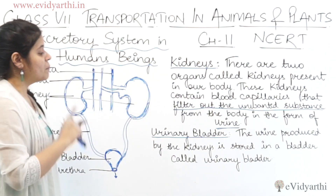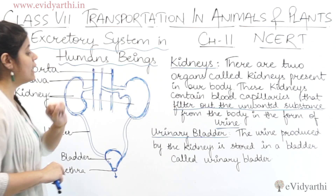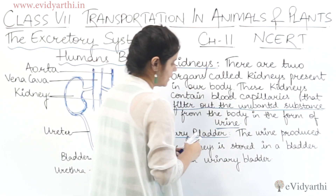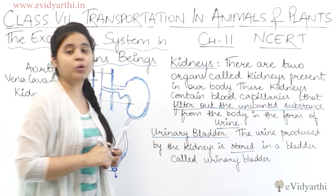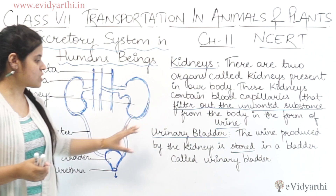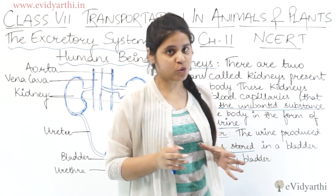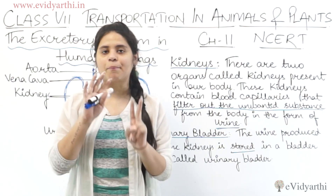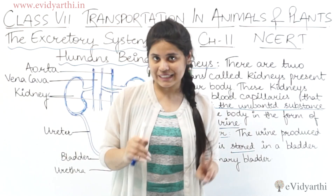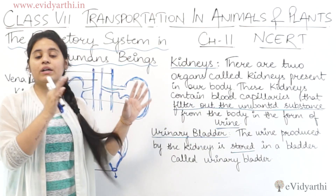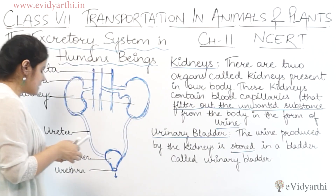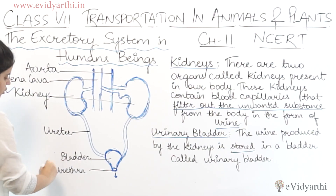The next organ is the urinary bladder. The urine produced by the kidneys is stored in a structure called the urinary bladder. So the two organs we have discussed so far are the kidneys and the urinary bladder.